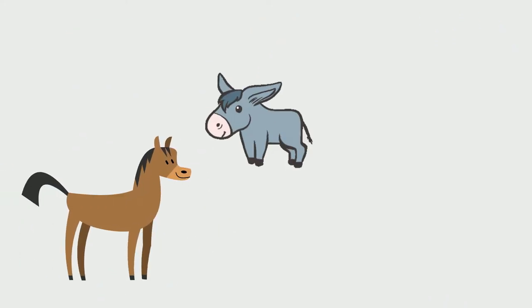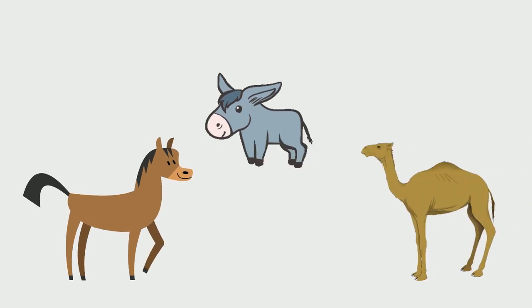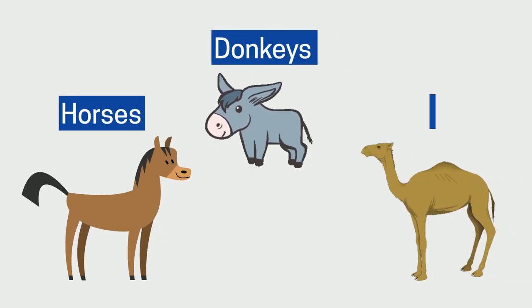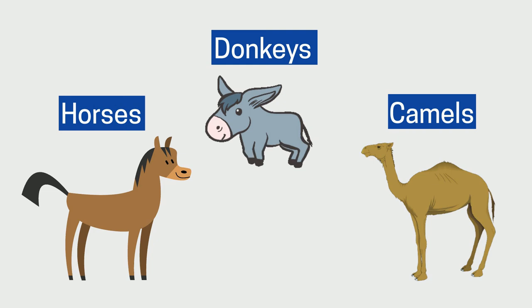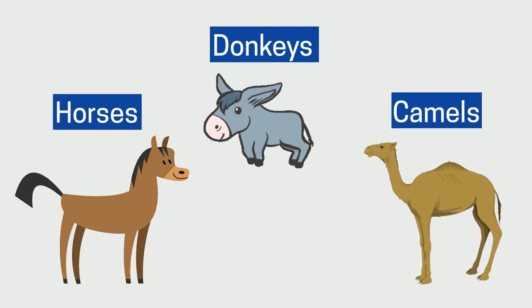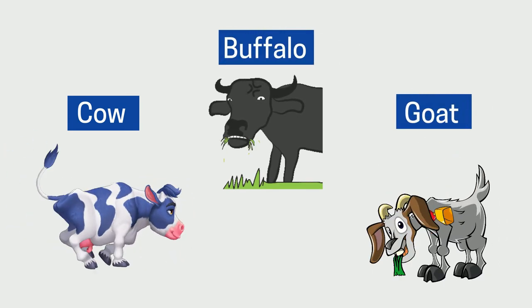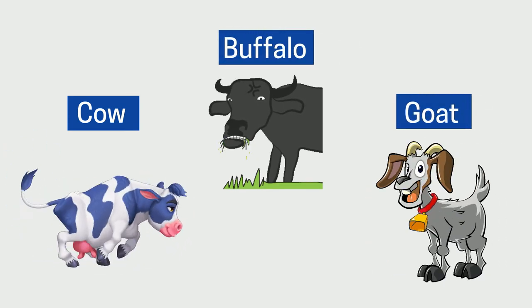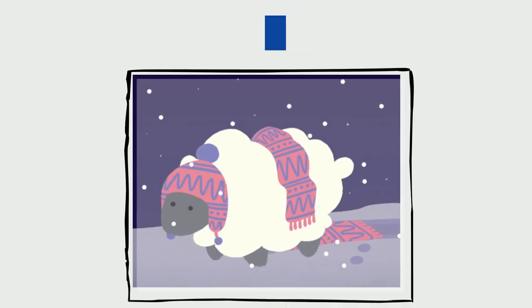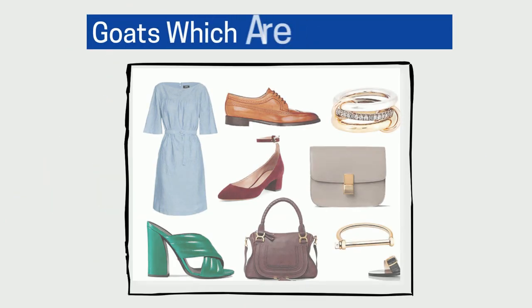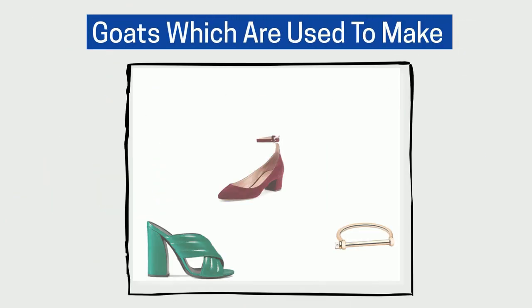Domestic animals can easily be tamed and depend on humans for their food, shelter, and general care. Domestic animals are very helpful to humans on the farm too. Some animals like horses, donkeys, and camels are used for transportation. Some animals such as cows, buffaloes, and goats are used to get milk.